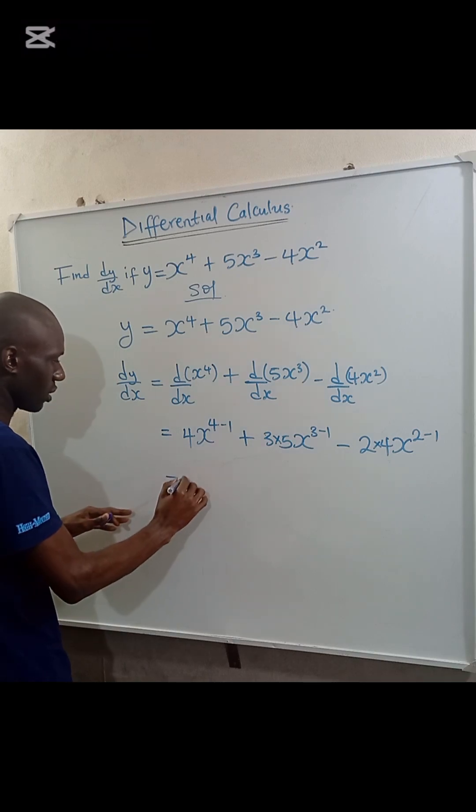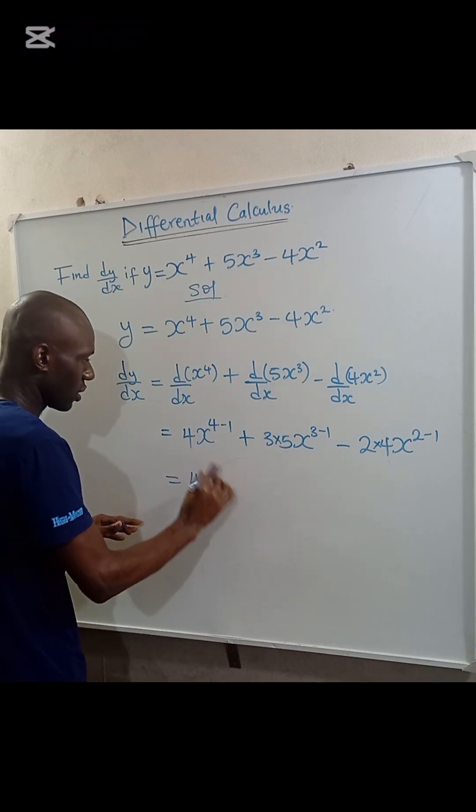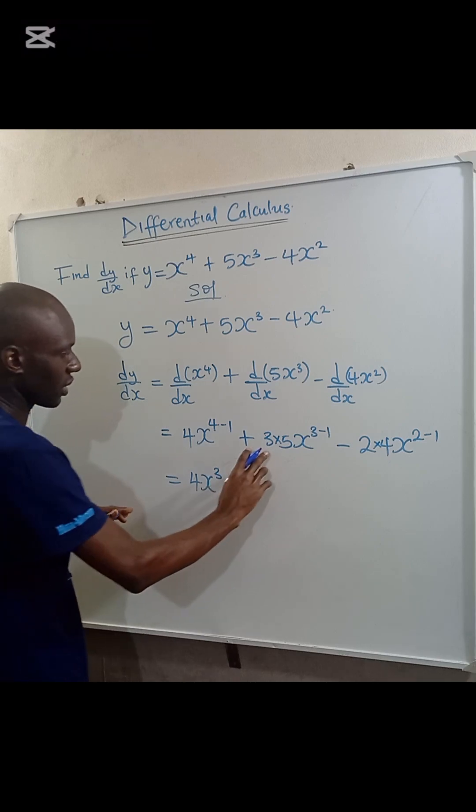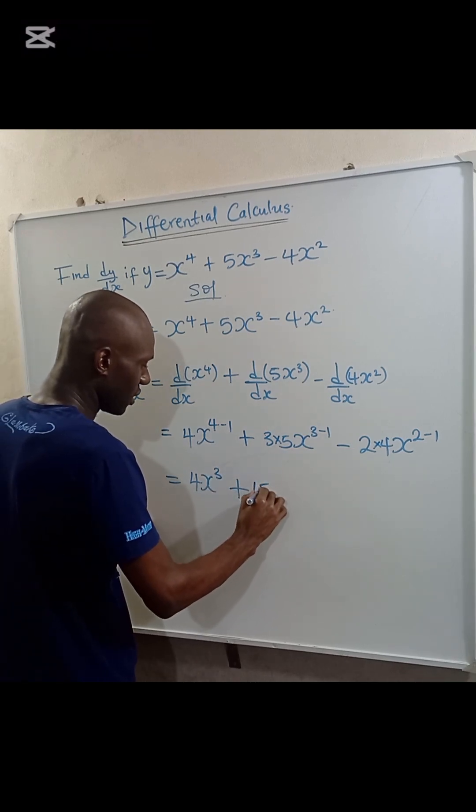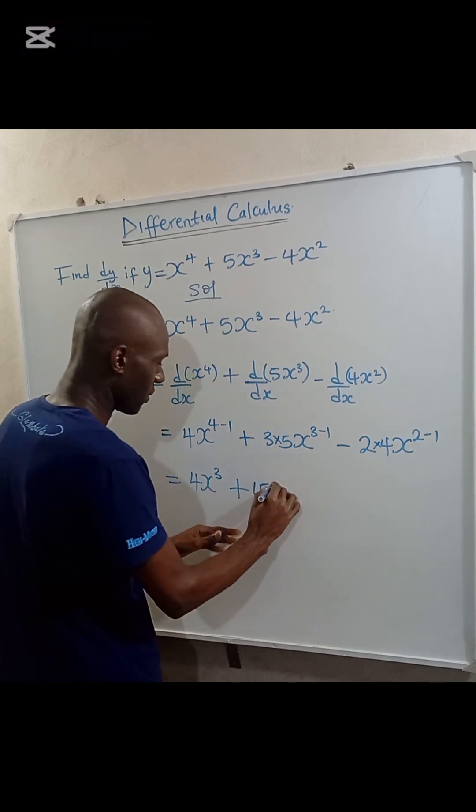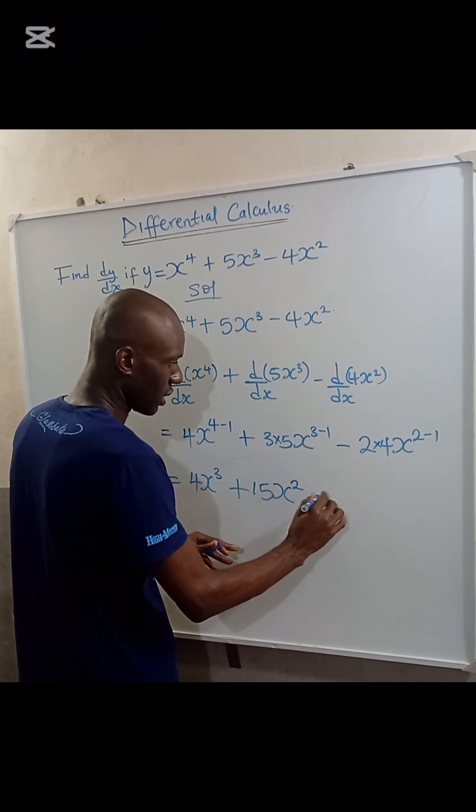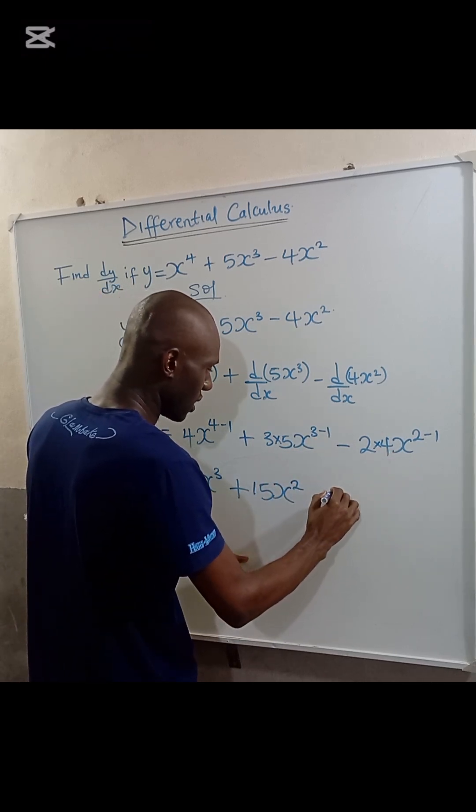So this becomes 4x to the power of 3, plus 3 times 5 is 15x to the power of 2, minus 2 times 4 is 8x.